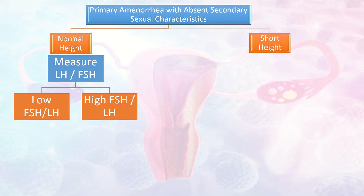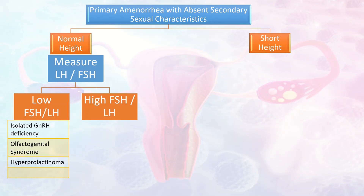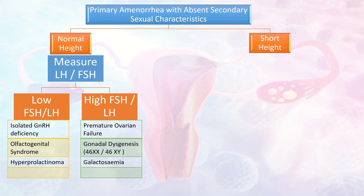In case of low FSH and LH levels, the differential diagnosis includes isolated GnRH deficiency, olfactogenital syndrome, and hyperprolactinoma. When we have high FSH and LH levels, the differential diagnosis includes premature ovarian failure, gonadal dysgenesis — which includes karyotypes 46XX and 46XY — and galactosemia.